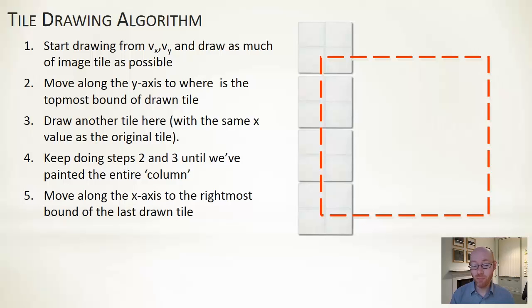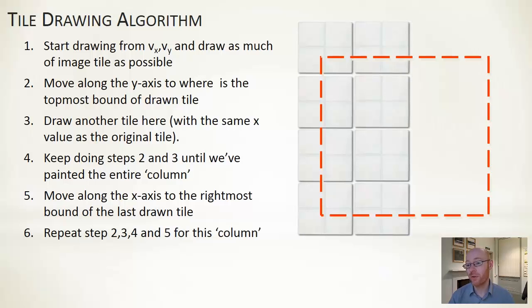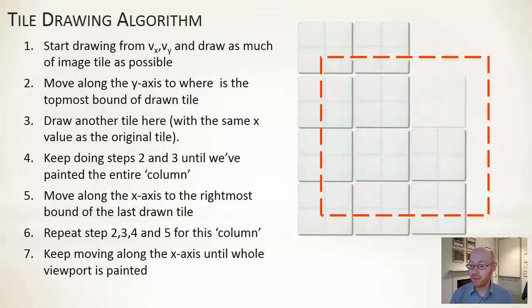And we'll keep doing that process until we have drawn vertically all of that particular strip of the viewport. Once we've done that, we then move along the x-axis to the next bit. And we're going to repeat steps 2, 3, 4, and 5 to draw in all of that particular horizontal strip. And then we keep repeating the process overall until we've filled in all of the vertical strips too.